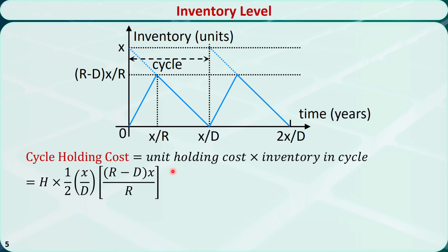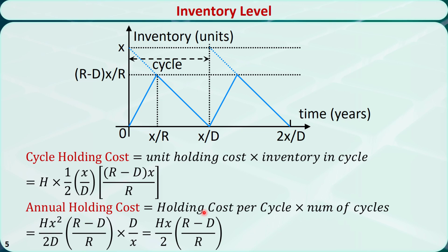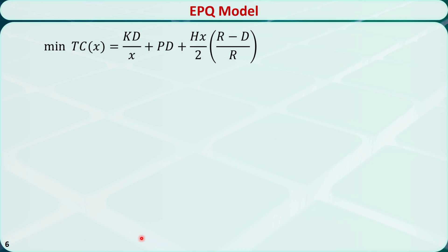The holding cost per cycle is equal to the unit holding cost times the inventory in a cycle. The unit holding cost is H dollars per unit per year, and the inventory in a cycle is the area of the triangle, which is the base x over D times the height (R minus D) times x over R, divided by 2. The annual holding cost is equal to the holding cost per cycle times the number of cycles D over x. The annual total cost is the sum of the annual setup cost, the annual producing cost, and the annual holding cost.